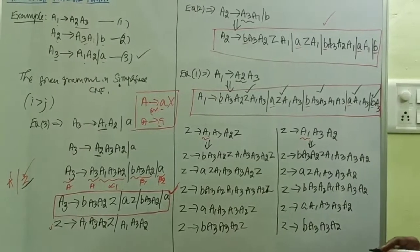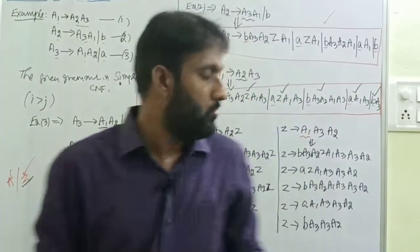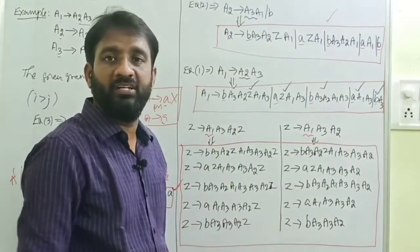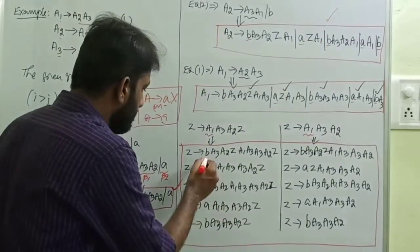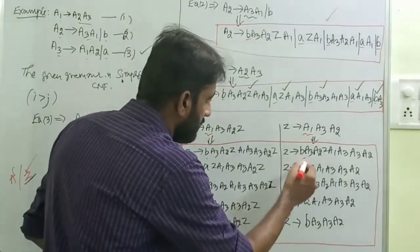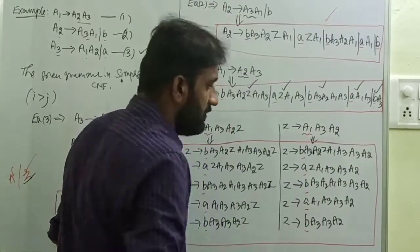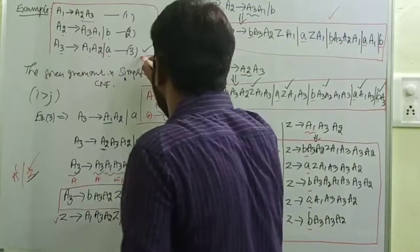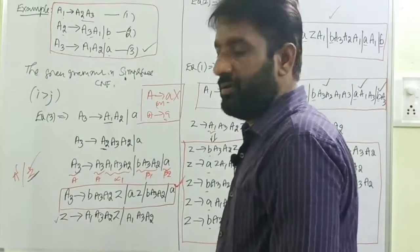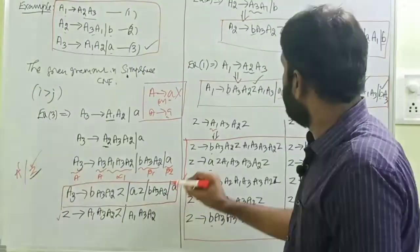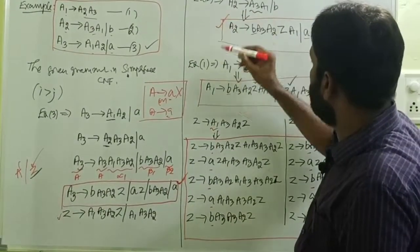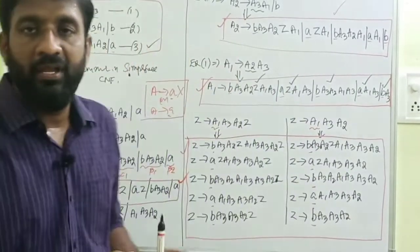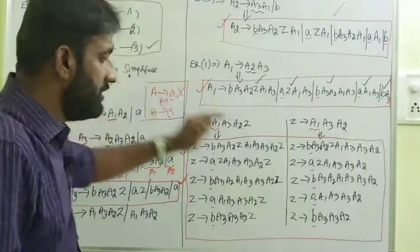All Z productions are also converted into the Greibach Normal Form — all start with a terminal only. Hence the given grammar is converted into the Greibach Normal Form. The final grammar consists of A3 productions, A2 productions, A1 productions, and Z productions. This is how we convert a given context-free grammar into the Greibach Normal Form.